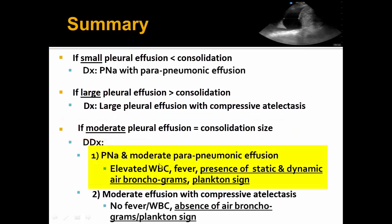If your patient is presenting with an elevated white count, fever, as well as the presence of static and dynamic air bronchograms on ultrasound, or evidence of complexity such as a positive plankton sign, then the diagnosis is most likely pneumonia with a moderate peri-pneumonic effusion. On the other hand, if your patient is clinically doing quite well with no fever or increased white count, and ultrasonographically there is an absence of air bronchograms or plankton sign, you can make a diagnosis of moderate pleural effusion with compressive atelectasis.